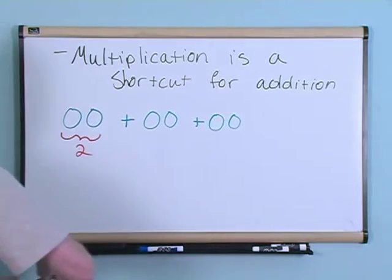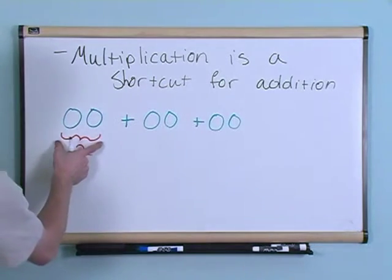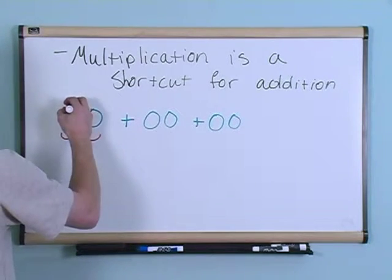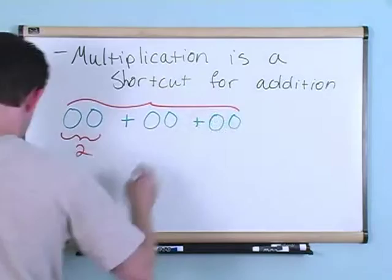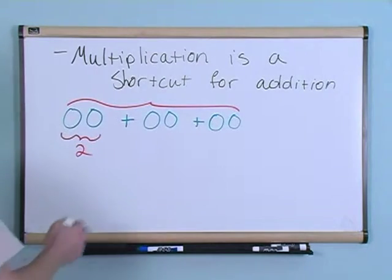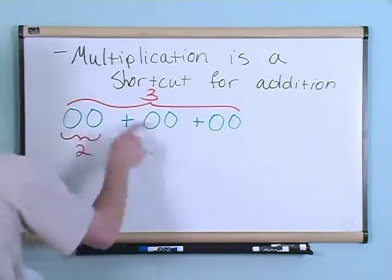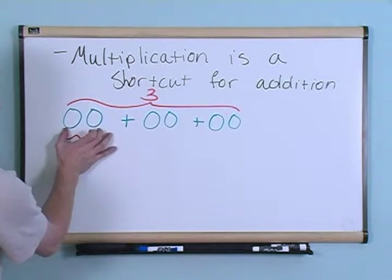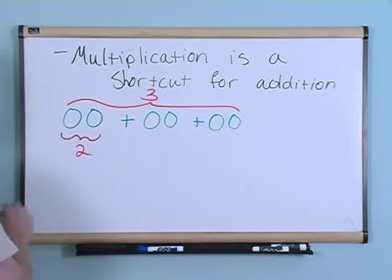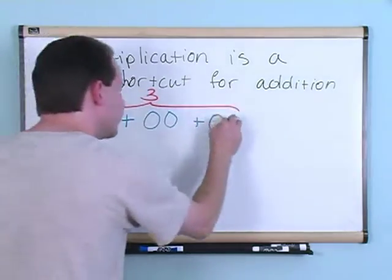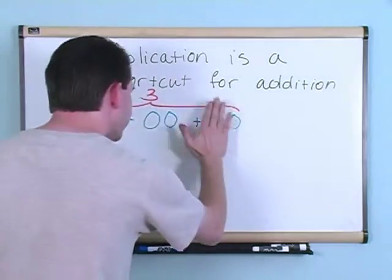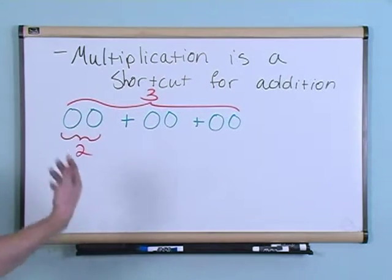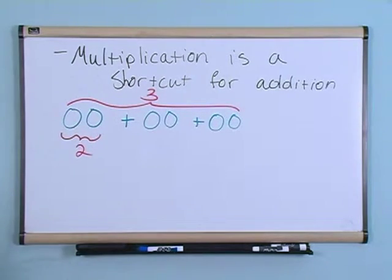Now, what I've done is I have a group of two here. And I have three groups of two. The way I've drawn it on the board is I've got in each group, I've got two things, right? But I've got three groups of two. One group, two groups, three groups. So I've got three groups total. And in each group, I have two things.